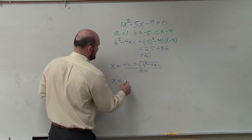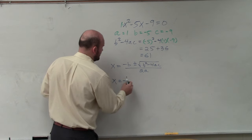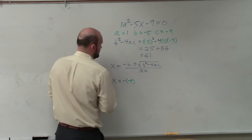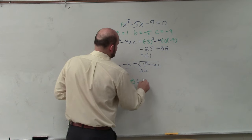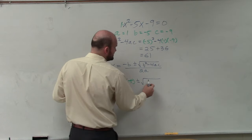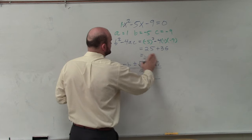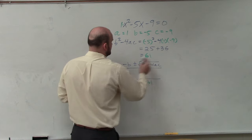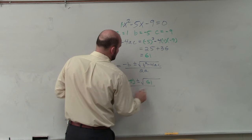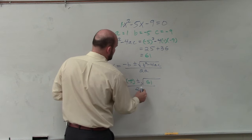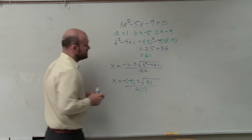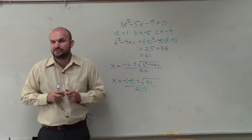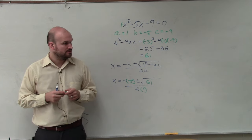So x equals, basically it looks like this, opposite of negative 5 plus or minus the square root. Well, we already know b squared minus 4 times a times c is 61. Let me make this green so you guys can see color code. Divided by 2 times a, which is 1. Does everybody see how I plugged in all that information? Yes? No? Questions? Good.